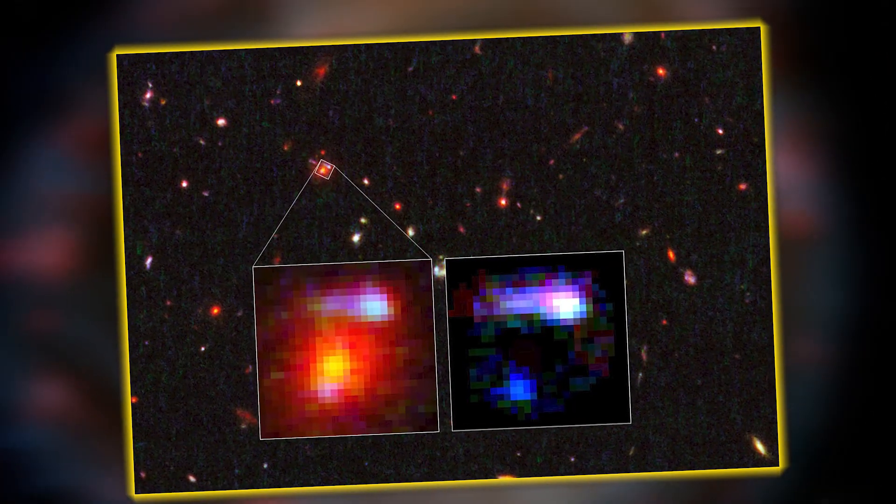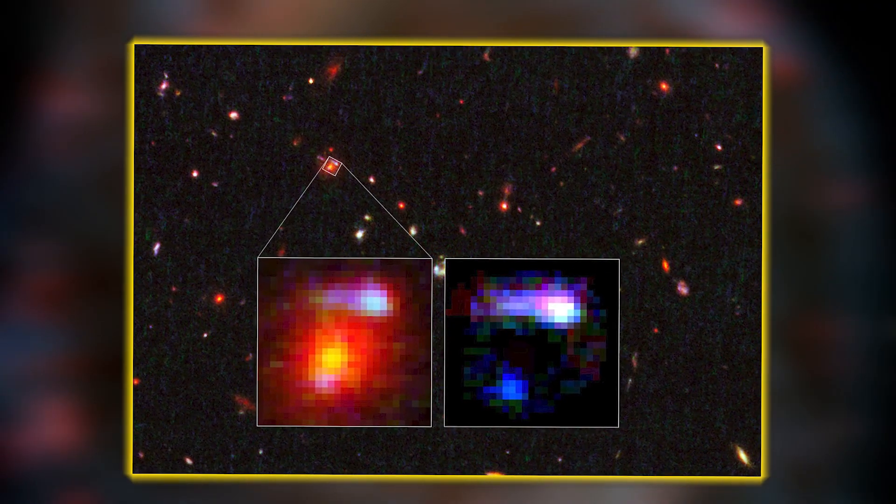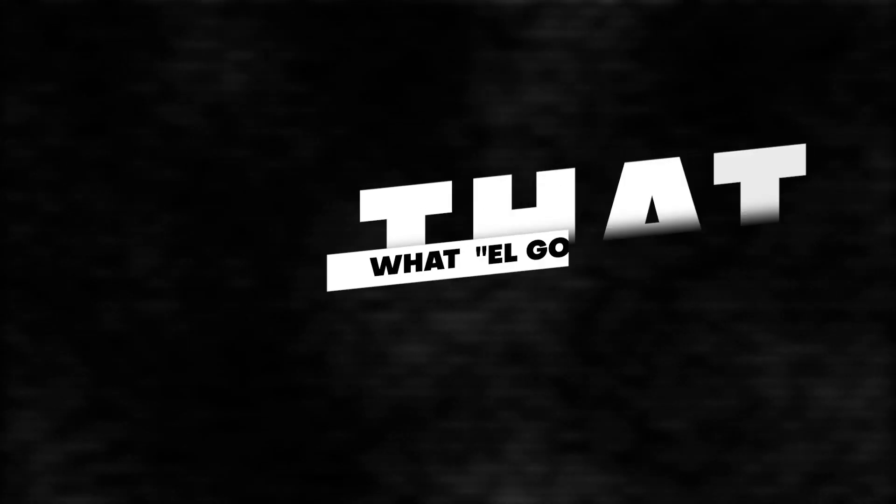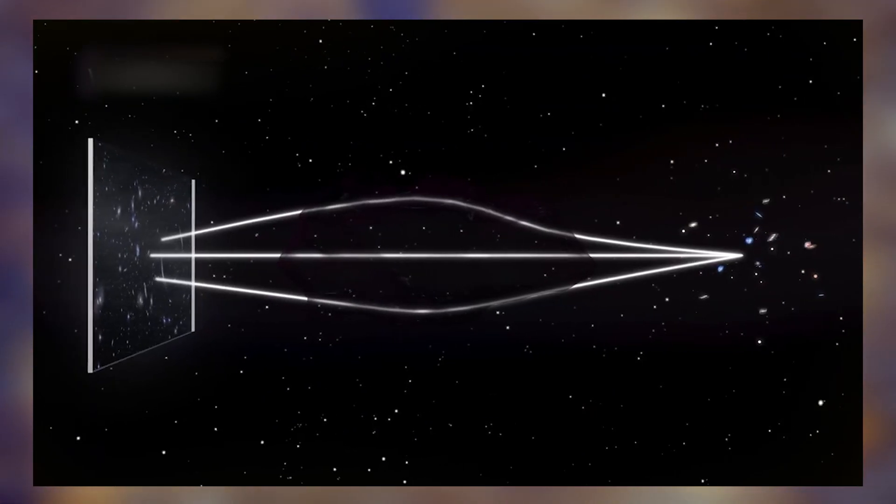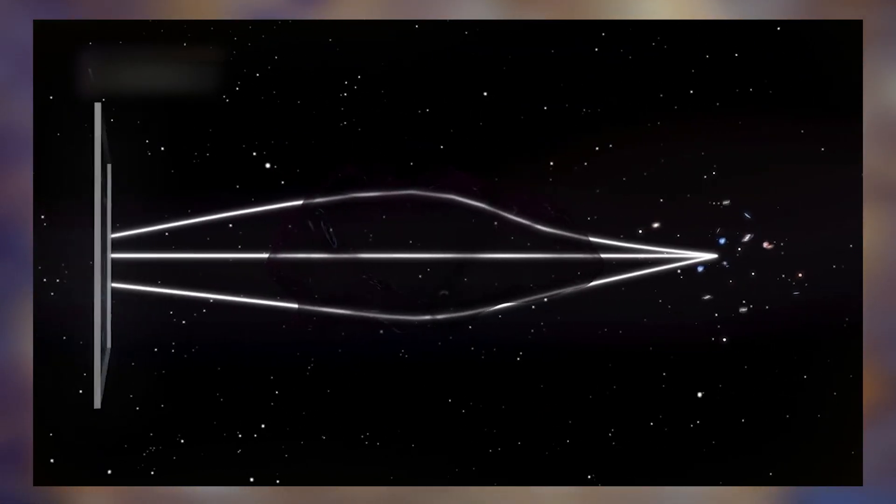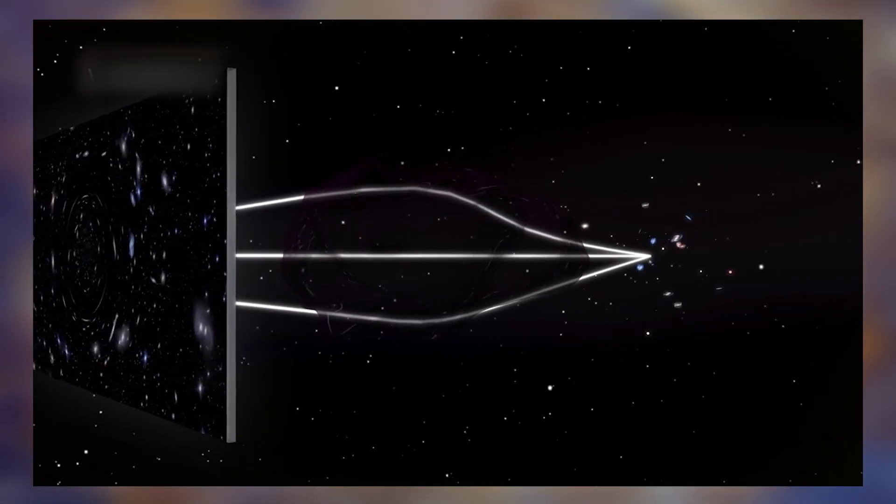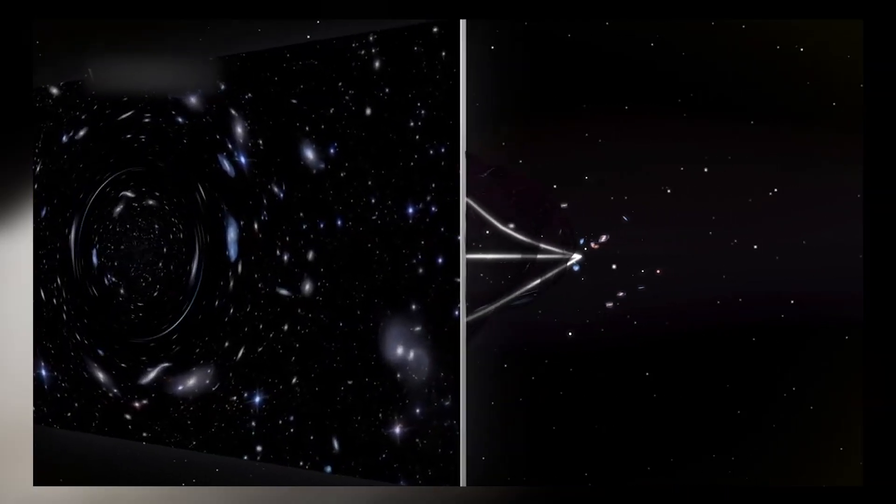Imagine a cosmic magnifying glass that lets us see ancient objects in unprecedented detail. That's what El Gordo does, thanks to a little something called gravitational lensing. It's like putting on cosmic glasses that reveal hidden wonders from billions of years ago.